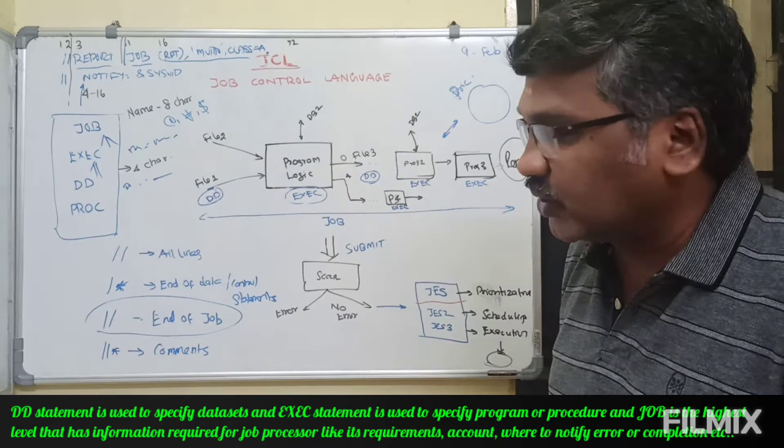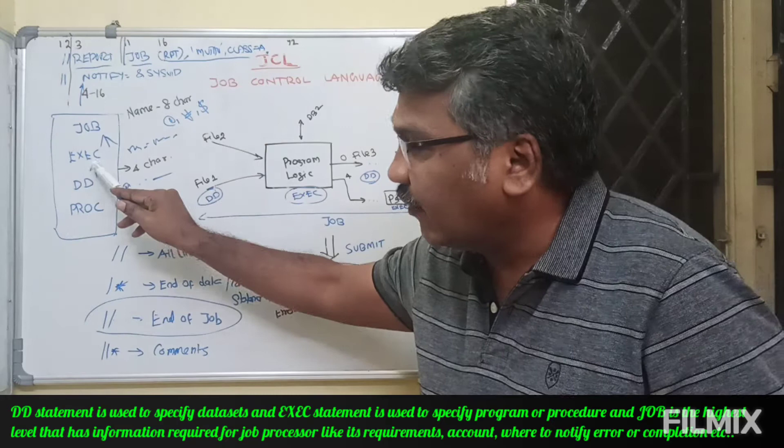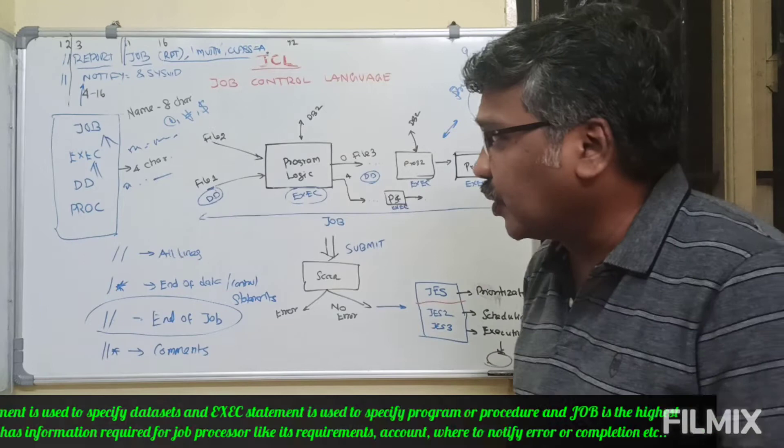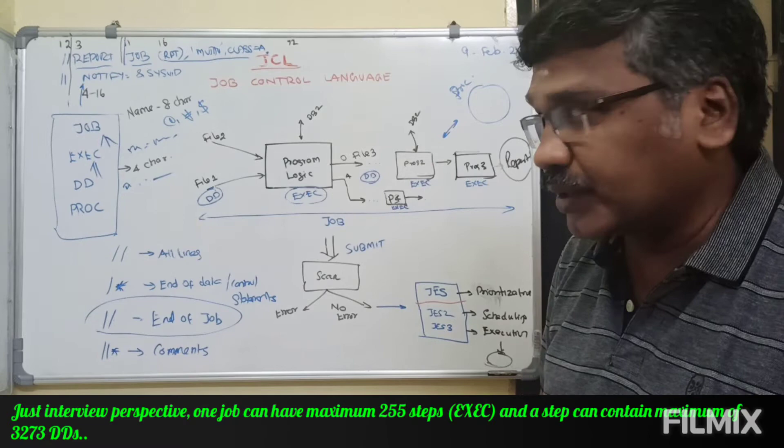So, job is nothing but a high-level grouping which defines the unit of complete work. EXEC is nothing but a program, so one job contains n number of programs. Every program will have n number of DD statements. DD is meant for files. So all we need to learn now is what are the parameters and how to code JOB, EXEC, and DD.